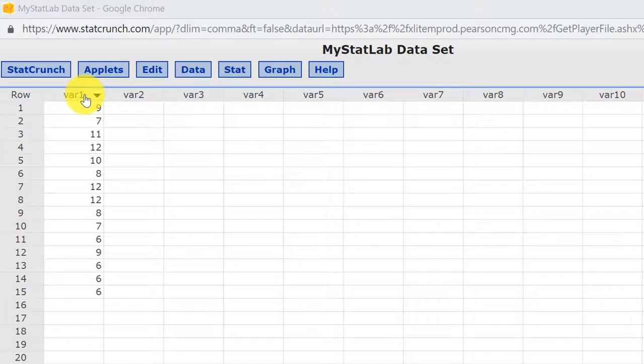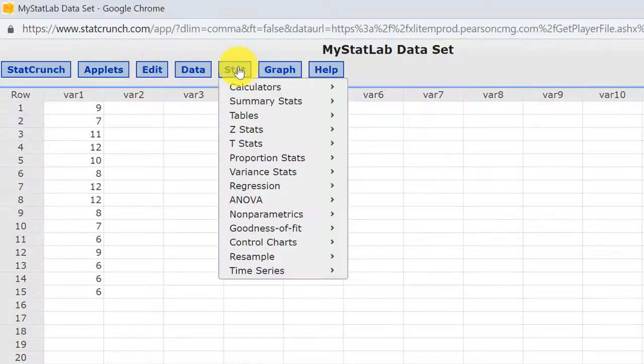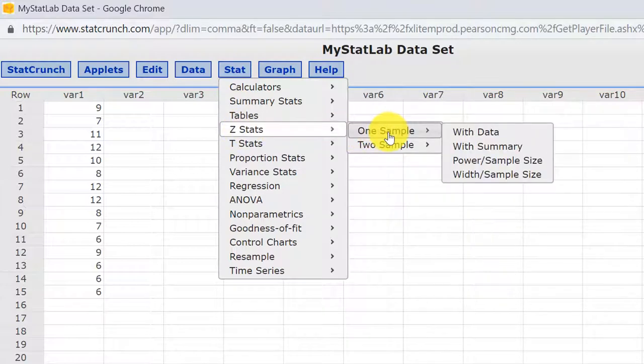We have our data in this column labeled variable 1, and we want to run a Z test. We had one sample, so we click on Stat, and we look for Z, for Z distribution, one sample, and then we have data this time.